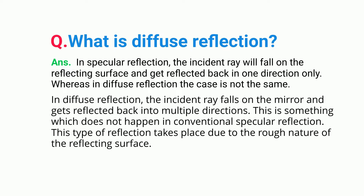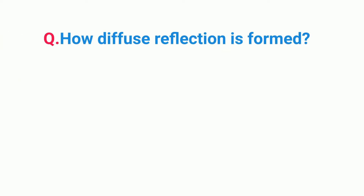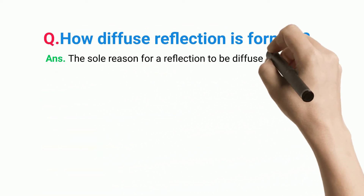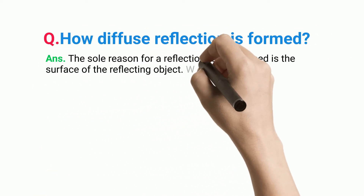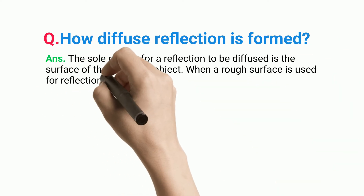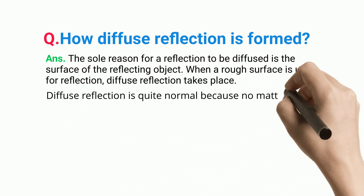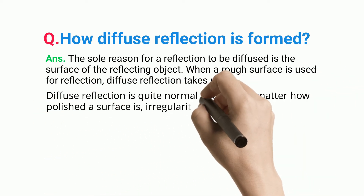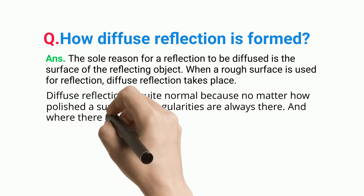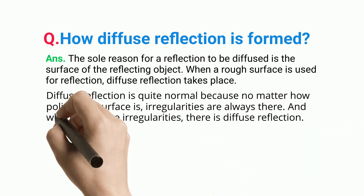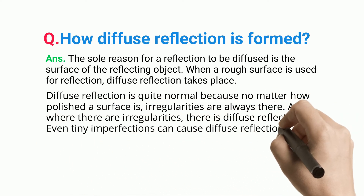This type of reflection takes place due to the rough nature of the reflecting surface. The sole reason for a reflection to be diffused is the surface of the reflecting object. When a rough surface is used for reflection, diffuse reflection takes place. Diffuse reflection is quite normal because no matter how polished the surface is, irregularities are always there, and where there are irregularities, there is diffuse reflection.